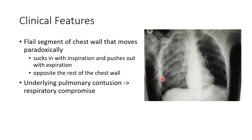This picture shows an X-ray of flail chest. As you can see, there are two separate fractures in three or more ribs, and there is underlying pulmonary contusion.